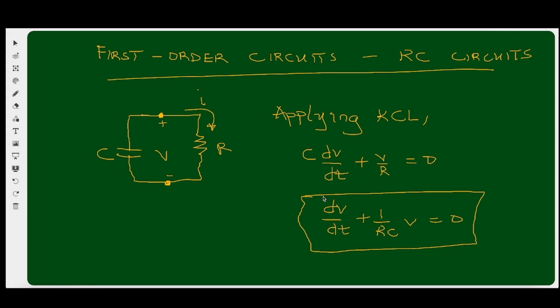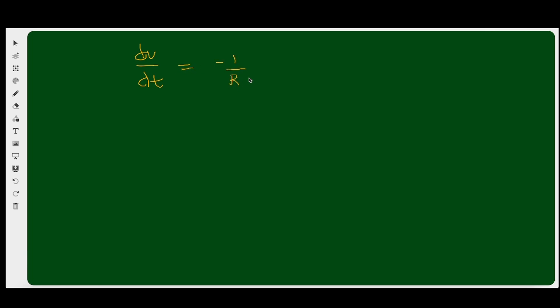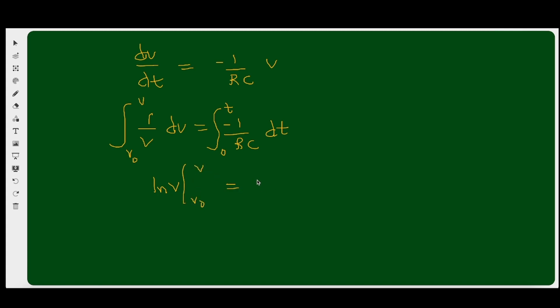To solve this and get the natural response, we apply separation of variables. Rearranging, dv/dt = −(1/RC)v. Separating variables gives (1/v)dv = −(1/RC)dt. Integrating both sides — the left from V₀ to v, the right from 0 to t — we get: ln(v) evaluated from V₀ to v equals −(1/RC)t evaluated from 0 to t.